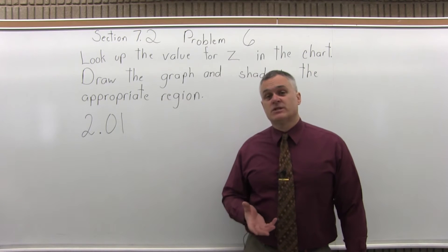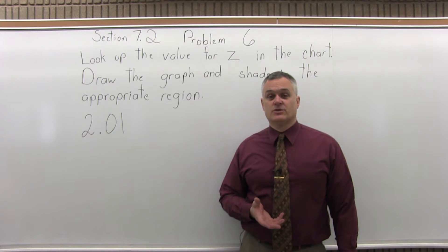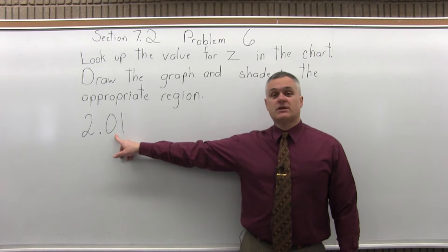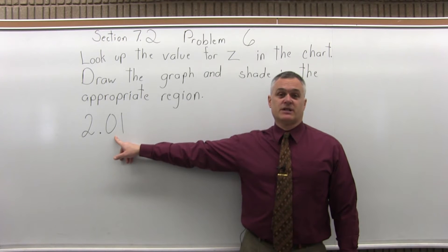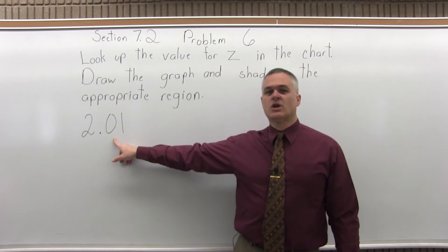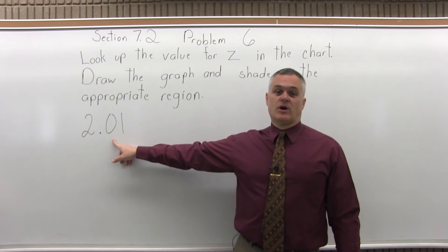So there's a four step process to look up any value in the chart. Step 1, write the number to look up so that it has two places after the decimal. This one already has two places after the decimal so there's no work to do for step 1. But sometimes you have to fill in a few zeros or just round the number off.